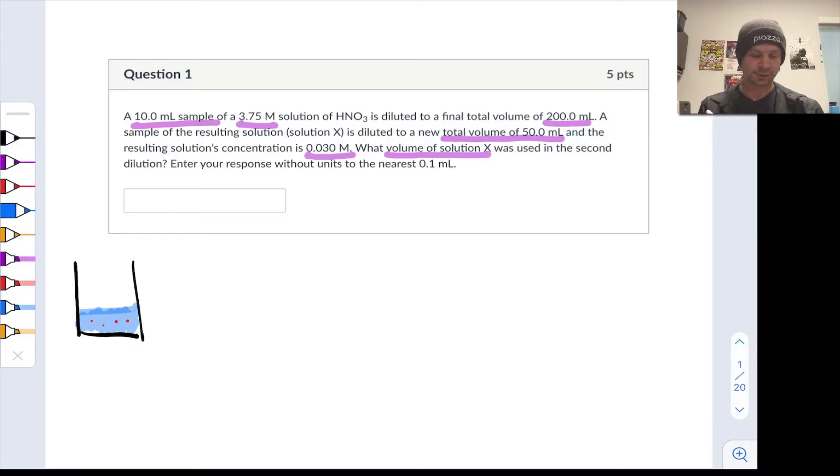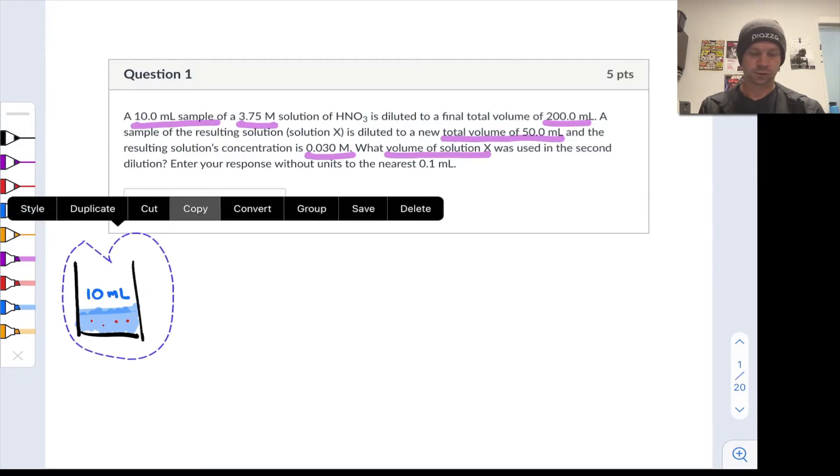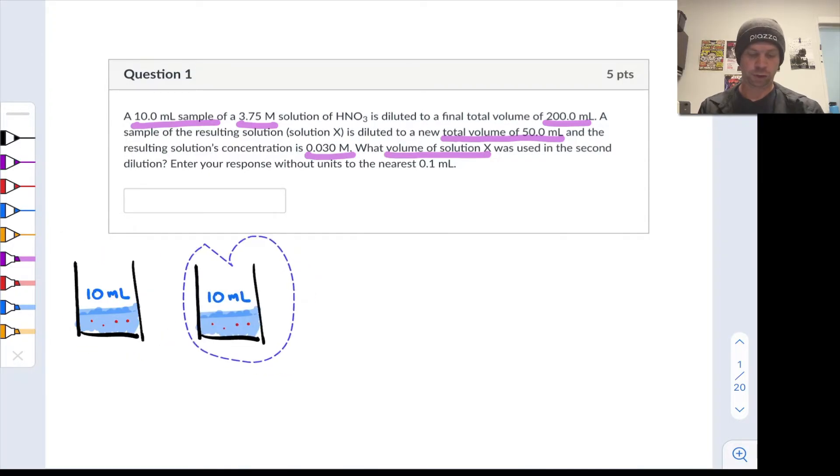We take 10 milliliters of that. I'm going to write 10 milliliters here as the original volume and that's diluted to a total volume of 200 milliliters in the first dilution.